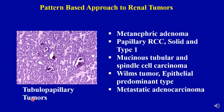The next pattern is tubulopapillary morphology with basophilic cytoplasm. On the benign spectrum this includes metanephric adenoma. Within the malignant spectrum you have papillary renal cell carcinoma with solid and type 1 morphology, mucinous tubular and spindle cell carcinoma which is a relatively uncommon rare subtype, adult Wilms tumor of the epithelial predominant type, and don't forget that metastatic adenocarcinoma can also present with similar morphology.